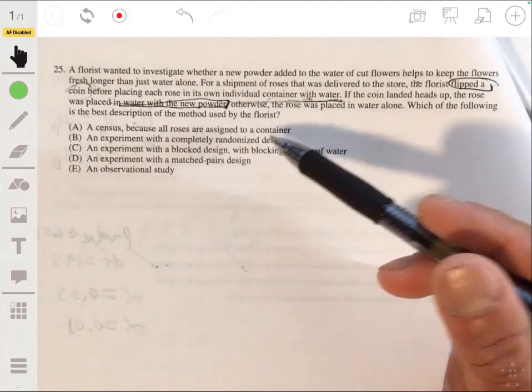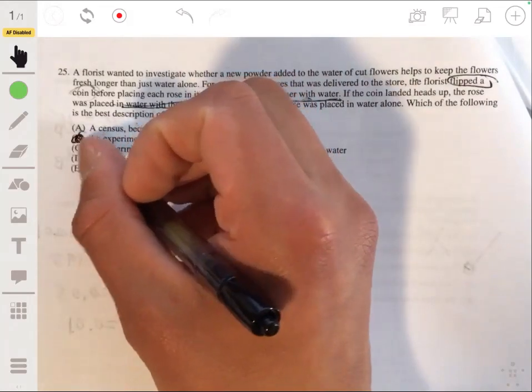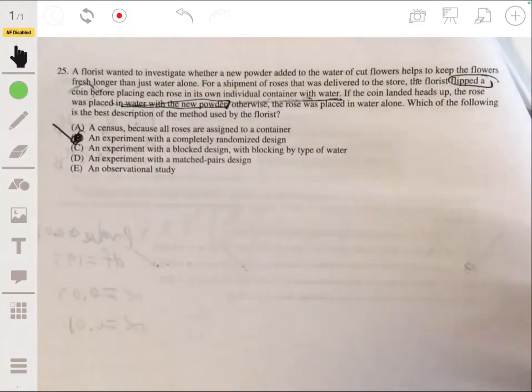And that allows you to just basically randomize the treatments to each rose without being biased. So this is basically the basic randomized experiment, an experiment with a randomized design. So the answer is B. Nothing fancier, no blocks, nothing, no strata, nothing like that.